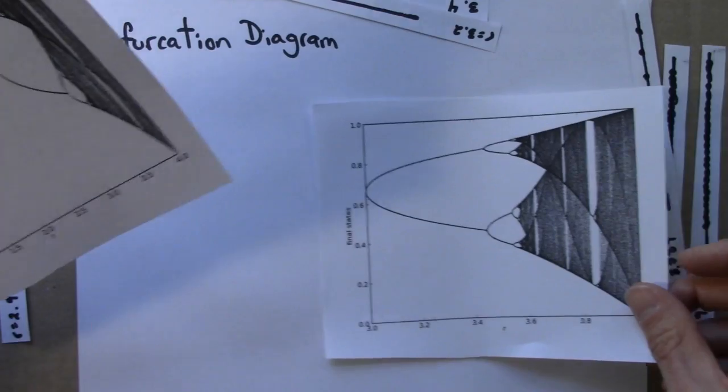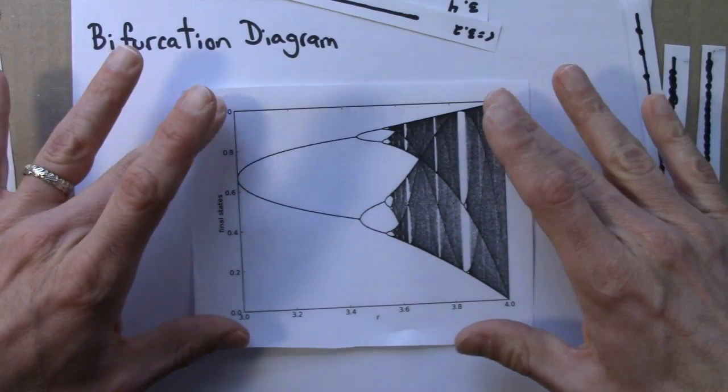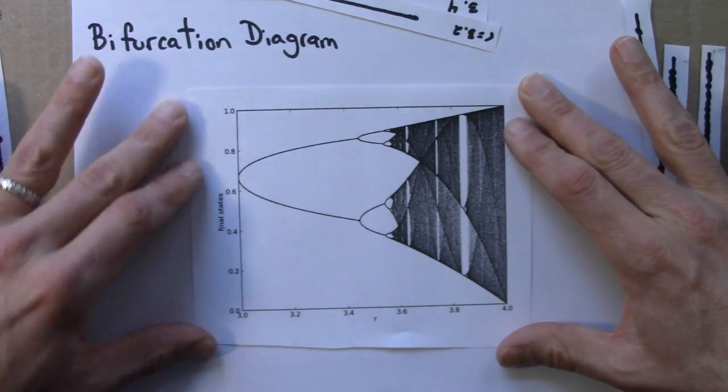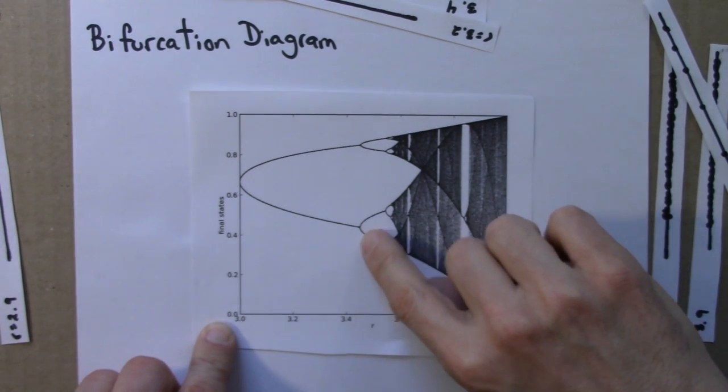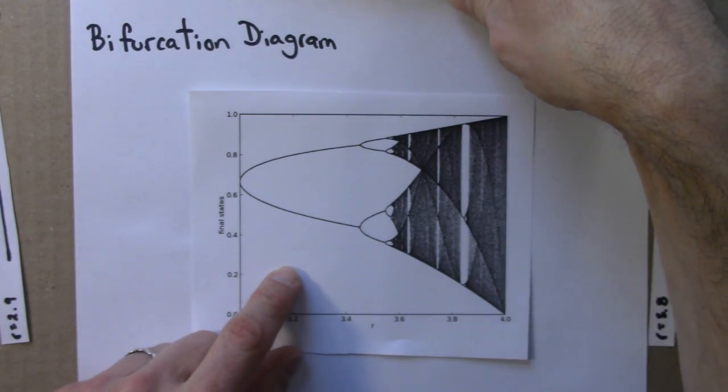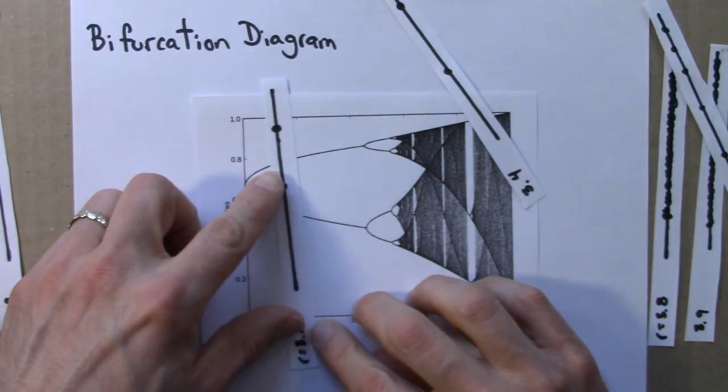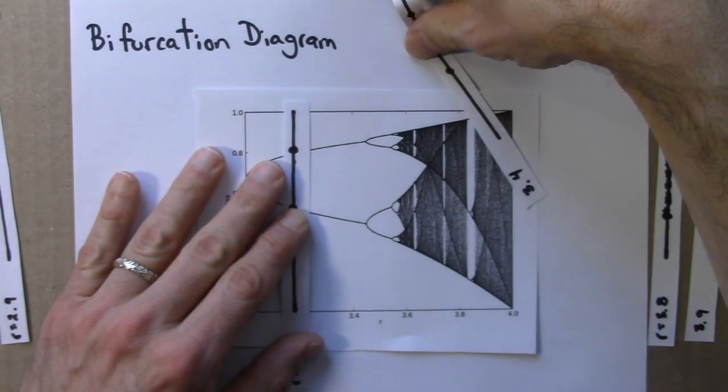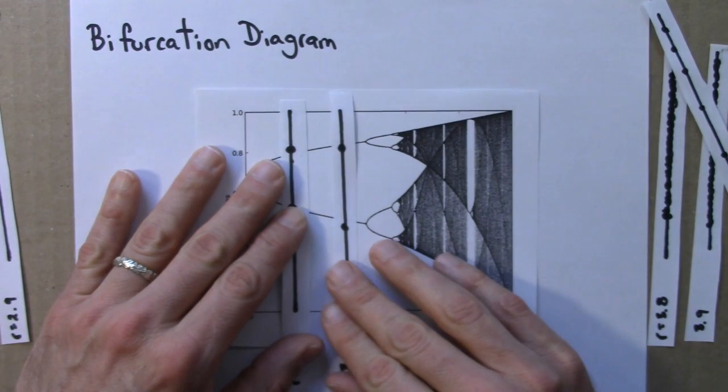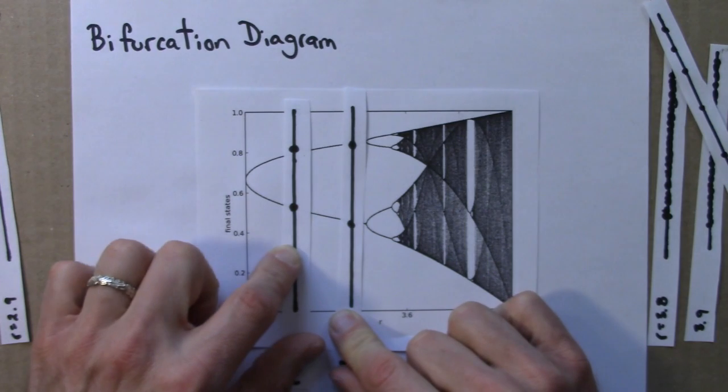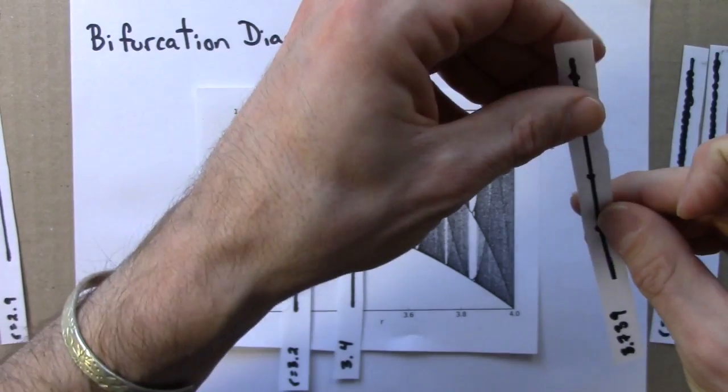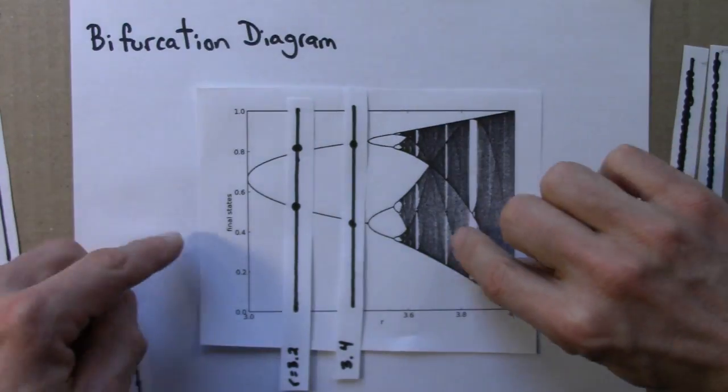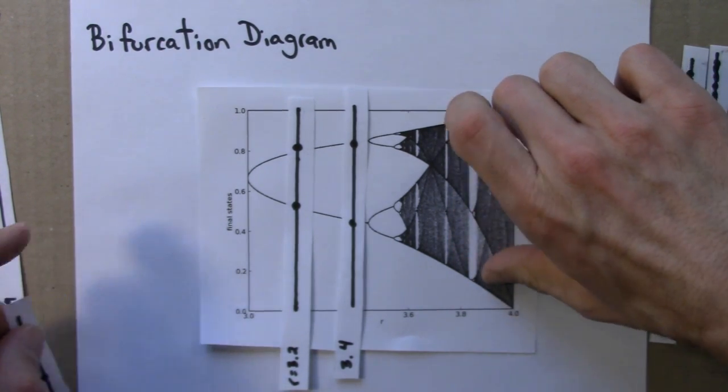So here, I've zoomed in and this is a bifurcation diagram from 3 to 4. So we see in this region from 3 to about a little more than 3.4, the behavior is period 2. Here are the two phase lines, final state diagrams we drew previously. There's 3.2 and there's 3.4 and they line up pretty well. Let's see if I can get a few more on here. Here's 3.739 and that corresponds to this funny region here, this light region. We'll look at that more closely in a bit.